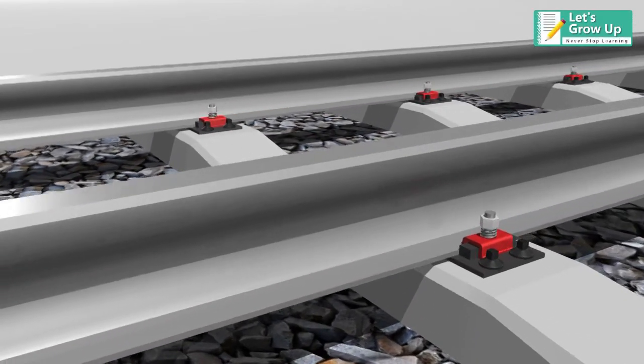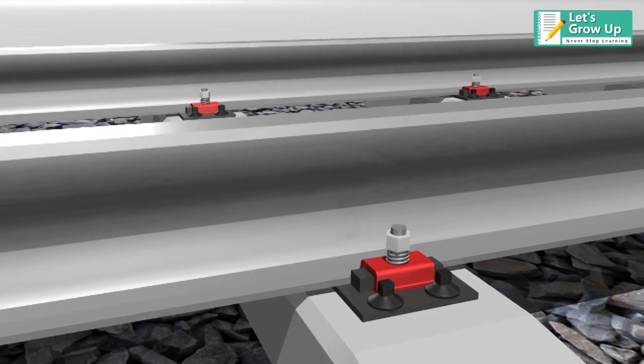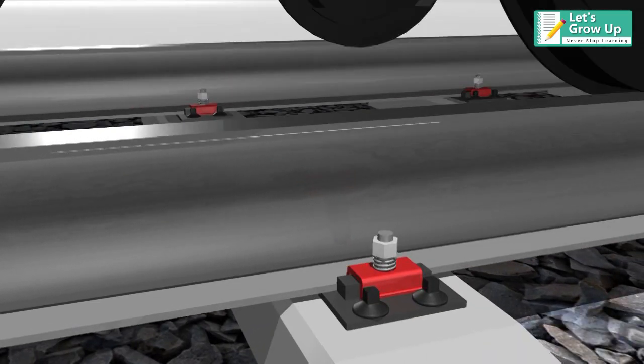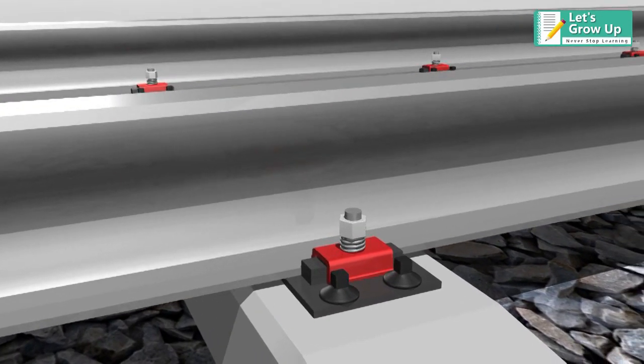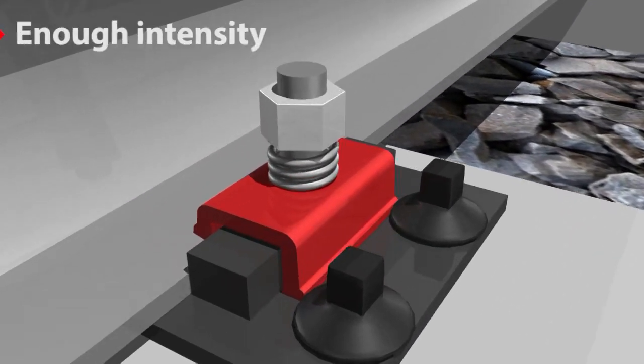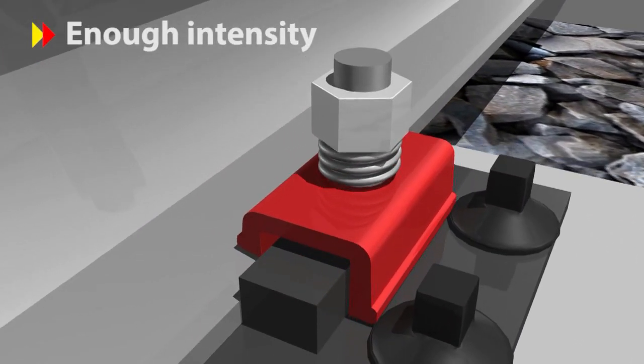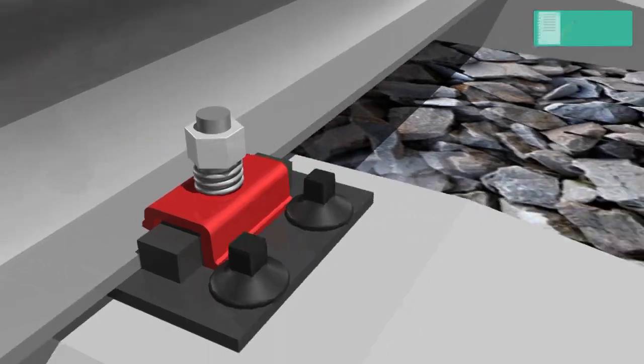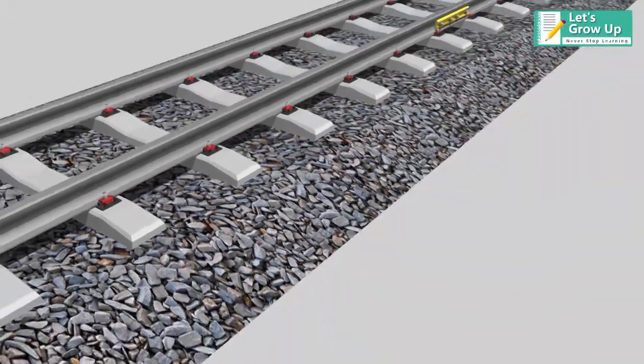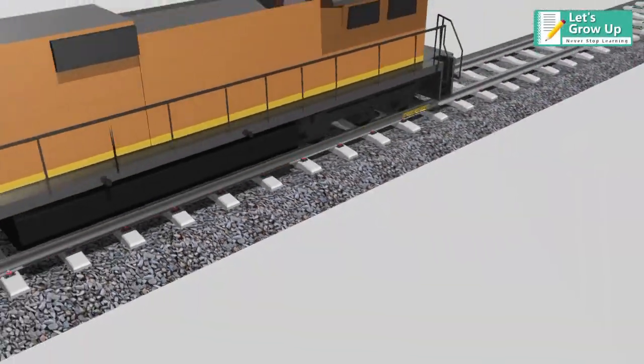Rail fastening system gives the full plate a buffer and absorbs the shock that the train presses on the rail. It needs to meet the requirement of enough intensity, durability and certain elasticity, especially with the application of high-speed rail and the improvement of railway security.